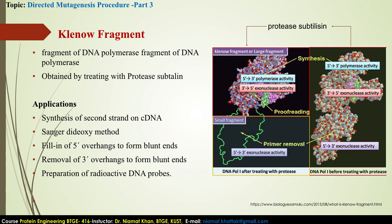Briefly, what is the Klenow fragment? Klenow fragment is the large fragment of DNA polymerase I enzyme of E. coli, produced by proteolytic cleavage of DNA polymerase I by an enzyme known as subtilisin. Refer to the figure for clear understanding: on the right side is DNA polymerase I before treating with protease, and on the left side upon treatment with protease, two fragments are formed — a large fragment called the Klenow fragment and a small fragment with 5' to 3' exonuclease activity. The large Klenow fragment lacks 5' to 3' exonuclease activity.